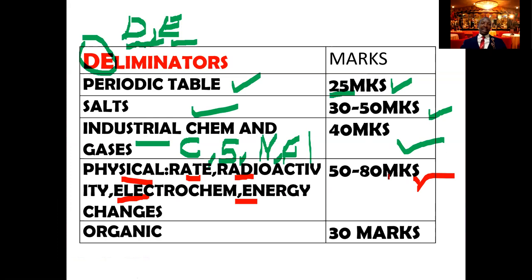Physical chemistry is contributing 50 to 80 marks because you are going to get like three questions from this particular area. Then we have organic chemistry, which gives about 30 marks. When you focus on all these deliminator topics, you may find yourself getting more than 120 marks, which is around 60%. These are the strongholds of chemistry.